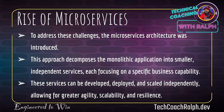Here comes the rise of microservices. To address these challenges, microservices architecture was introduced. This approach decomposes the monolithic application into smaller independent services, each focusing on a specific business capability. These services can be developed, deployed, and scaled independently, allowing for greater agility, scalability, and resilience. We look at the different parts of the monolithic architecture and pick them out — turning each part into its own service — and give them the necessary APIs to communicate with one another while still running independently.